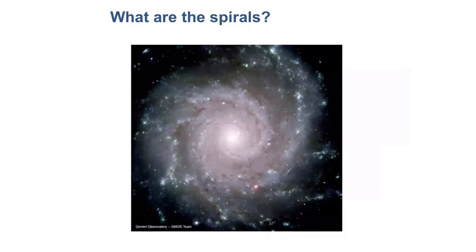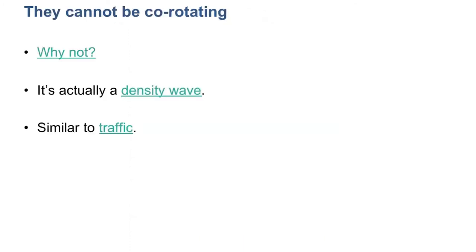So what are the spiral arms themselves? This is an interesting question because there's a lot of confusion, and it's not what most people typically think. The spiral arms themselves cannot be co-rotating, meaning the stars in the spiral arms can't stay in the spiral arms and just rotate around the galaxy.